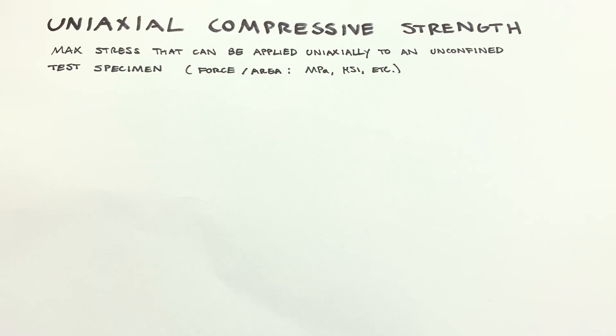The uniaxial compressive strength for a rock is the maximum stress that can be applied uniaxially to an unconfined test specimen. That's going to be in units of force per area, which of course we would say MPA, KSI, whatever system or scale you need to use.